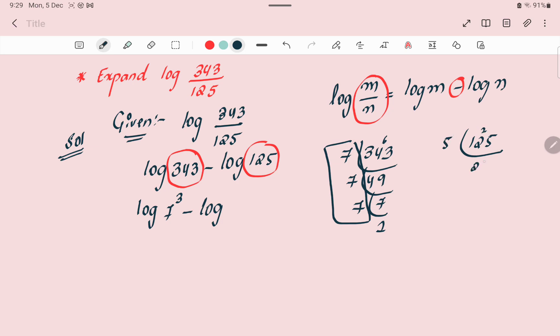125 divided by 5 is 25, 25 divided by 5 is 5, 5 divided by 5 is 1. So 5 is repeating three times: 5 to the power of 3.